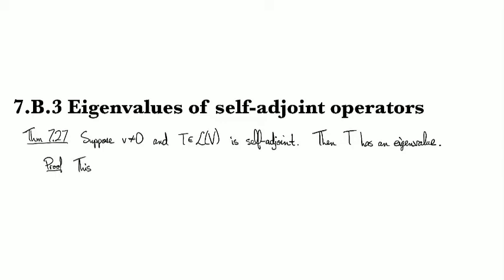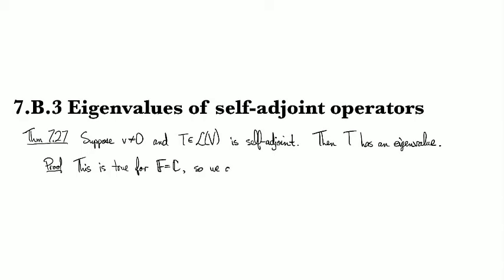So first off, note that this result is already shown for complex vector spaces, so we can assume that we're working over the reals without loss of generality.